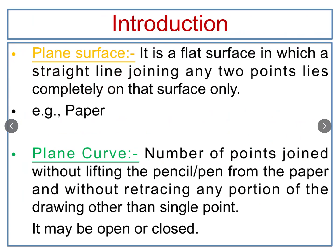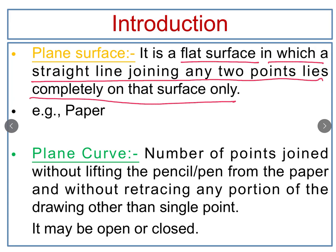We have plane surface and plane curve. You have already studied these in your previous classes, so let's recall them. A plane surface is a flat surface in which a straight line joining any two points lies completely on that surface. For example, paper is an example of a plane surface. When you draw a line or any curve on the plane surface, all the points of that curve or line will lie on that paper only.